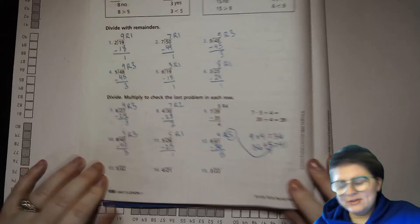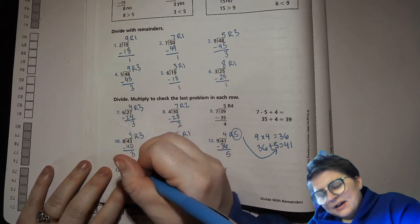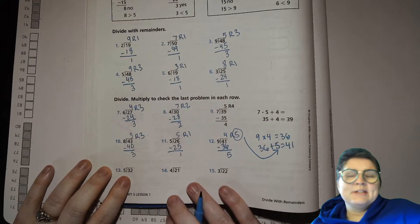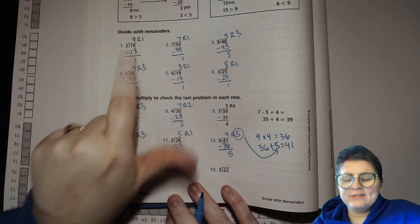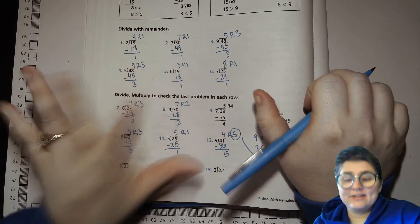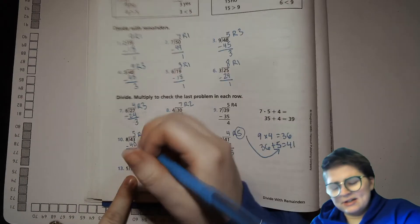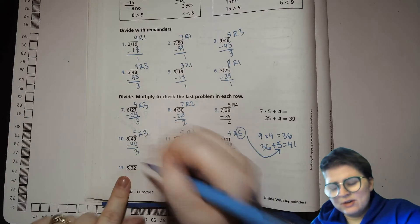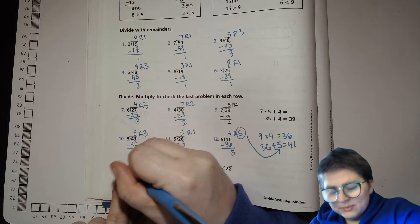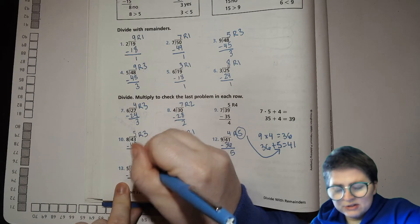Number 13. Here we go. 5 goes into 32 how many times? Well, I have 10, 15, 20, 25, 30. That's 6 fives for 30. 32 is not 5 more than that. That'll be 7 fives and 35. So, we'll say 6, which will get us 30. And then we'll subtract and we'll have 2 left over. So, 6 remainder 2.